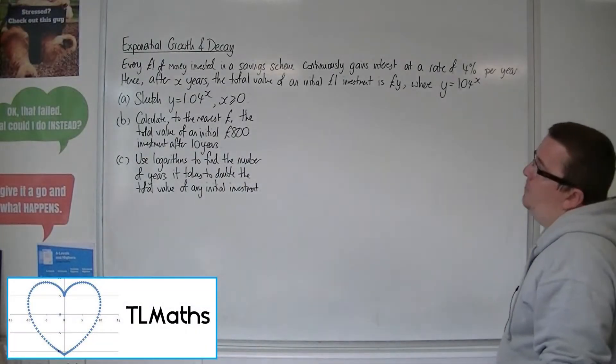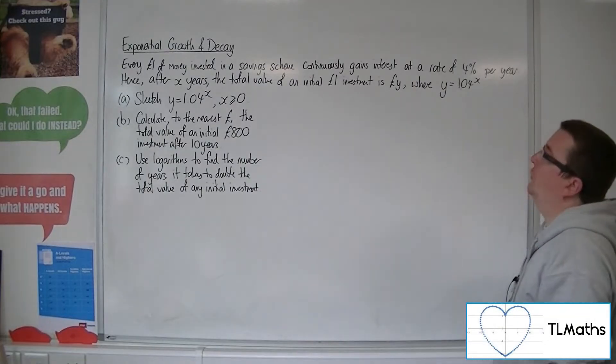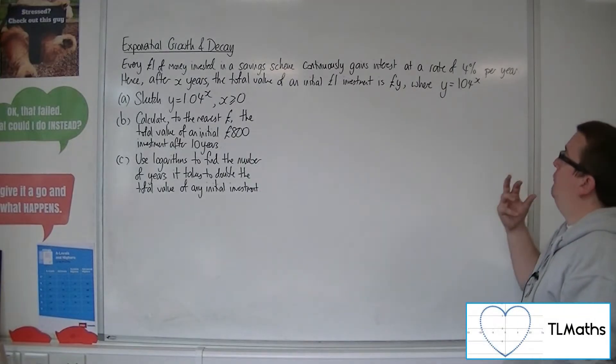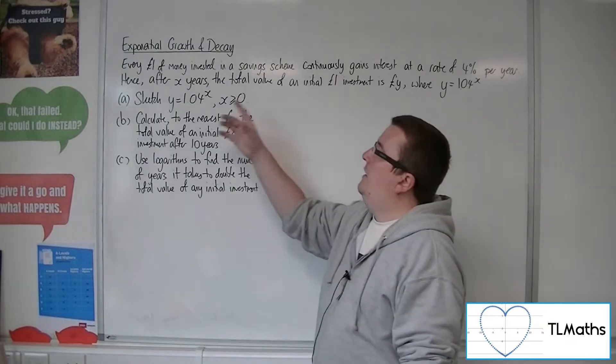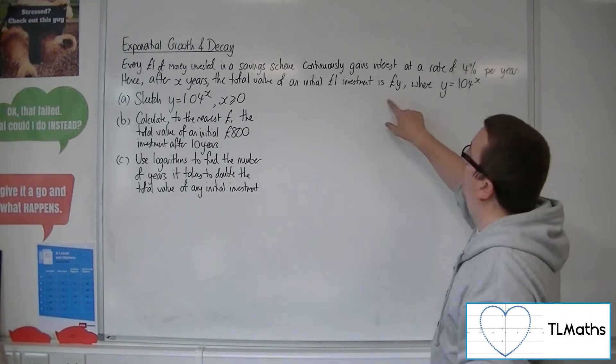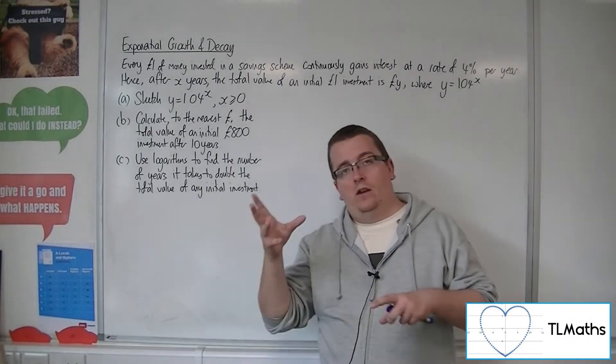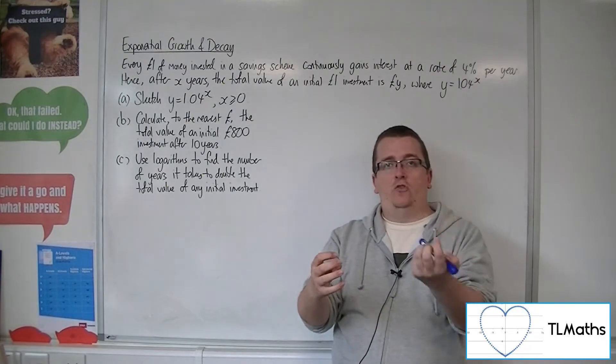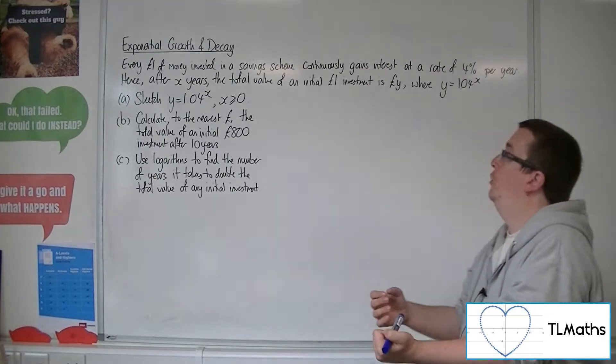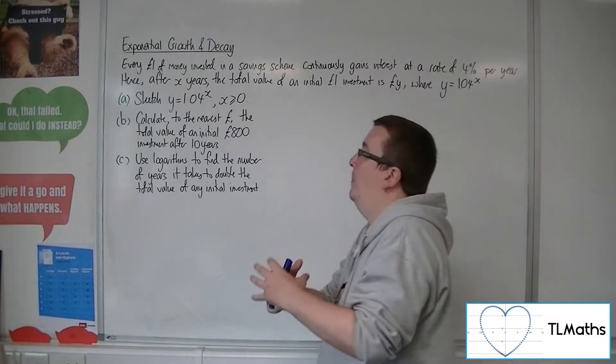So let's say every £1 of money invested in a savings scheme continuously gains interest at a rate of 4% per year. Hence, after x years, the total value of an initial £1 investment is y pounds, where y equals 1.04 to the power of x. The 1 plus the interest, the 0.04, all to the power of x, because it's compounding.